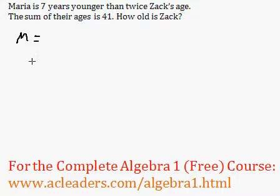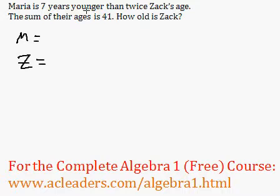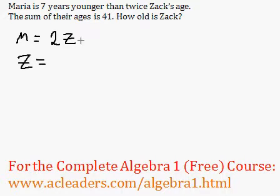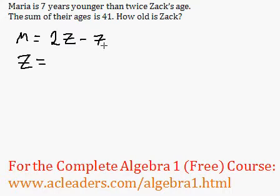Okay, so we have Maria and we have Zach. Maria is 7 years younger than twice Zach's age. Twice Zach's age can be 2z, and she is 7 years younger. So we can say that Maria is 2z minus 7, and z is representing Zach's age here.